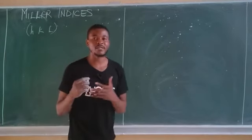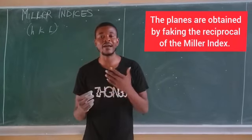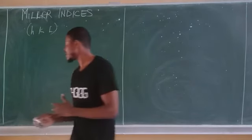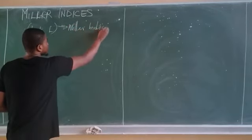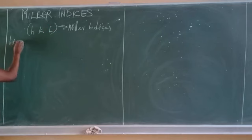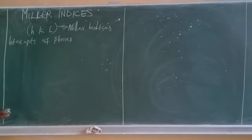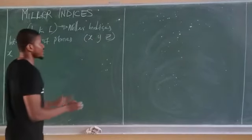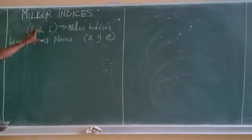The planes and directions are obtained from the Miller indices. The planes are obtained by taking the reciprocals — each reciprocal stands for the intercepts in the x, y, and z axes. For instance, given a set of Miller indices, we need to find the intercepts of the planes in three dimensions on the x, y, and z axes.